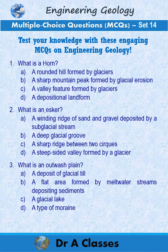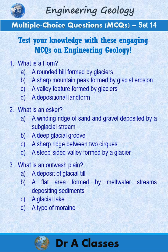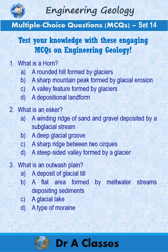Question 2: What is an esker? A. A winding ridge of sand and gravel deposited by a subglacial stream. B. A deep glacial groove. C. A sharp ridge between two cirques. D. A steep-sided valley formed by a glacier.